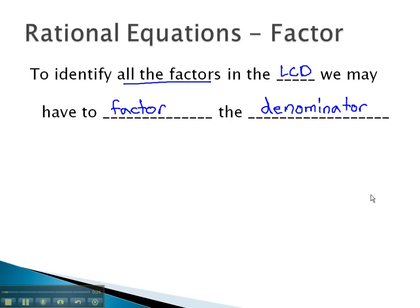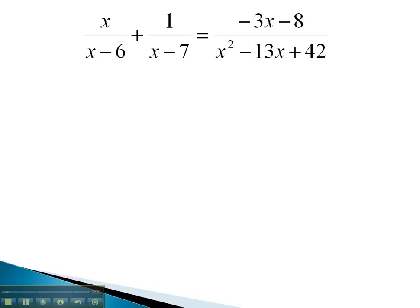For example, if we were to consider this problem, you might notice that the denominator on the right needs to be factored. It factors nicely to x minus 6 times x minus 7. Notice the other denominators have factors of x minus 6 and x minus 7 also, so this will become our least common denominator, x minus 6 times x minus 7.